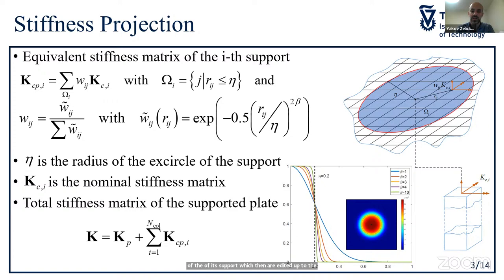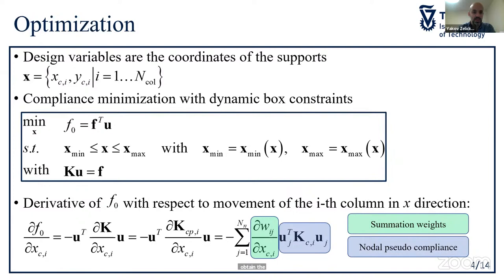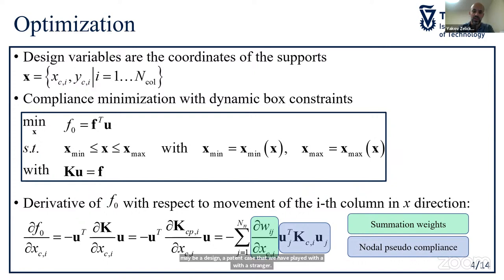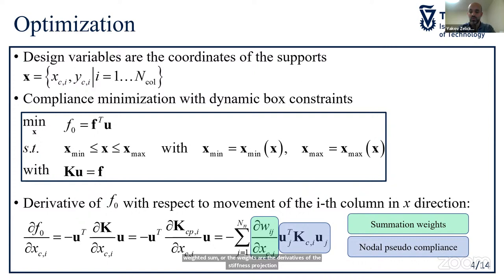The optimization formulation is straightforward: design variables are the coordinates of the supports. We minimize compliance with only box constraints. The sensitivity of compliance ends up as a weighted sum where the weights are the derivatives of the stiffness projection factors with respect to the design variable, multiplied by non-adjoint compliances.